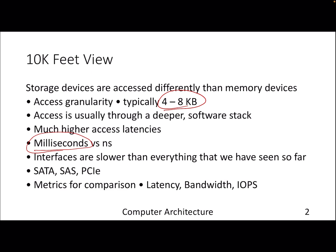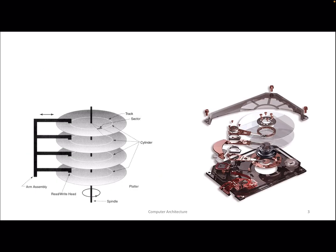You must have heard about SATA and the PCI bus. The metrics of interest are more or less the same — you want to improve latency, bandwidth, and of course the throughput, which here will be the input/output operations per second. Let's look at magnetic disks, or hard disk drives, in our systems.